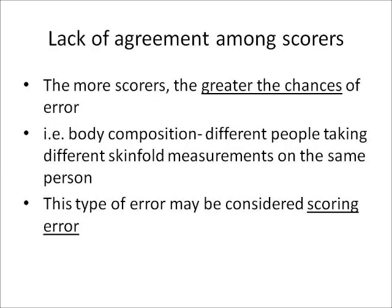Lack of agreement among scorers: the more scorers, the greater the chances of error. An example is body composition — different people taking different skinfold measurements on the same person. Body composition or skin calipers involves pinching, and different testers are going to pinch different amounts even on the same site. This type of error may be considered scoring error.